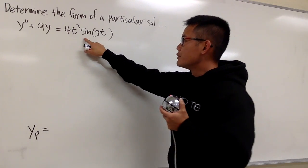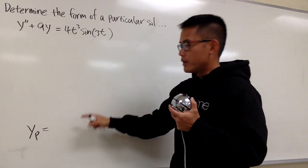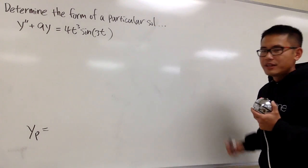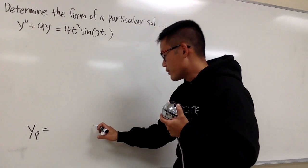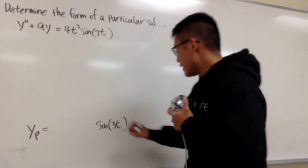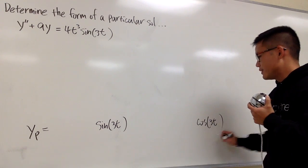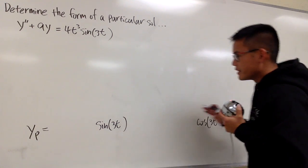Now, you see, we have sine of 3t. But for the particular right here, we must have sine of 3t and cosine of 3t together. And let me just put this down for now. Sine of 3t. And then let me just leave some space. Cosine of 3t. We must have both of them together.